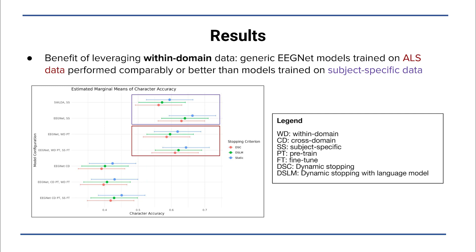Lastly, we found that the generic EEGNet models trained on other individuals with ALS performed comparably or better than models trained on subject-specific data, highlighting a benefit of within-domain transfer learning.